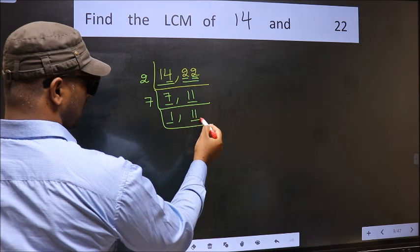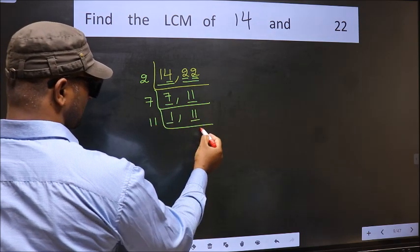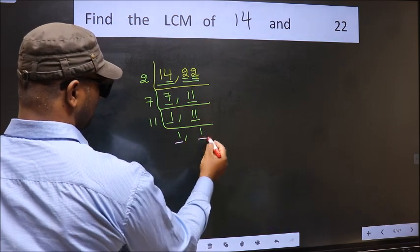So, focus on the other number 11. 11 is a prime number. So, 11 1s, 11. Now, we got 1 in both the places.